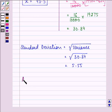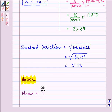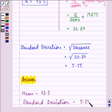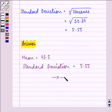So the answer to the session is, the value of mean is equal to 43.5 and standard deviation is equal to 5.55. Right. This completes the session. Hope you enjoyed it. Have a nice day.